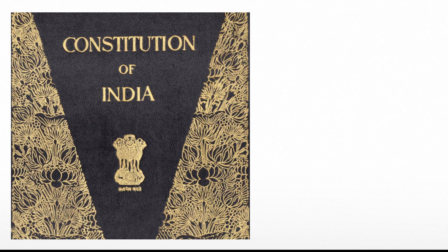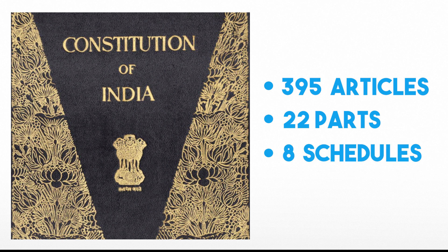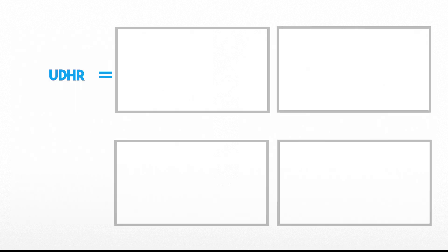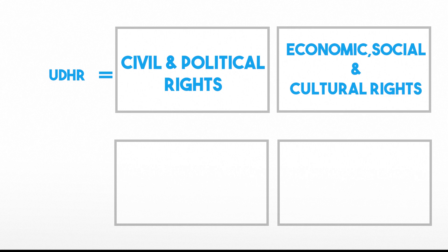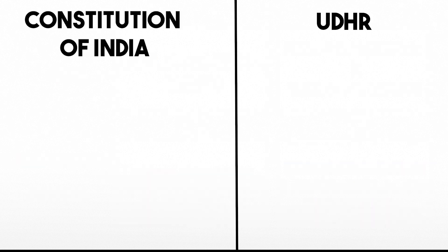The Indian constitution is the world's longest at its commencement. It has 395 articles in 22 parts and 8 schedules. The fundamental rights in the Constitution of India and the directive principles of state policy correspond with the rights enshrined in the Universal Declaration of Human Rights. To give UDHR a legal force, it is divided into two sets of rights: civil and political rights, and economic, social and cultural rights. Civil and political rights correspond with fundamental rights in the Constitution of India. Economic, social and cultural rights correspond with the directive principles of state policy.